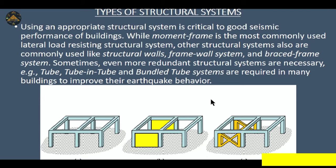While the moment frame is the most commonly used lateral resistance element, structural systems that are also used include structural walls, frame-wall systems, and brace frame systems. Sometimes even more redundant structural systems are necessary — for example, in the case of 100 or 150 story buildings, tube, tube-in-tube, and bundle tube systems are required to improve earthquake behavior.